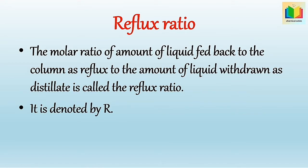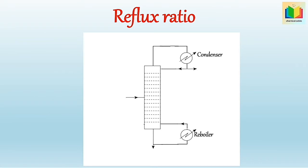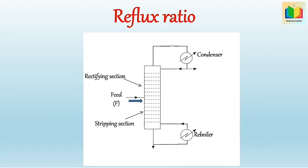Now let's see what are reflux and distillate. In this distillation column, the liquid mixture to be separated is introduced as feed. The tray or plate where feed is introduced is called the feed plate. The section above the feed plate is called the rectifying section, where the vapor is washed to remove the less volatile component with the liquid. The section below the feed plate including the feed plate is called the stripping section, where the liquid is stripped of the more volatile component by rising vapor.